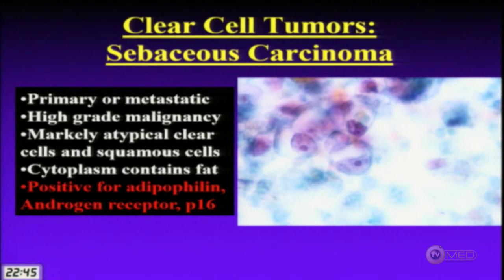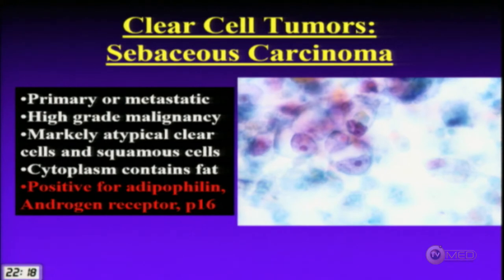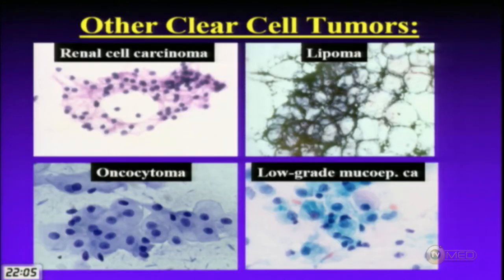Regarding sebaceous carcinoma: lymphatic drainage from the anterior scalp and face goes to intra- and periparotid lymph nodes, so we often see metastatic cutaneous cancers including sebaceous carcinoma there. It can also arise primarily within the parotid. Key marker: adipophilin is a great positive marker for sebaceous carcinomas; they're also positive for androgen receptor and P16. For other clear cell tumors, remember renal cell carcinoma — CD10 and RCC positive — and low-grade mucoepidermoid carcinoma.